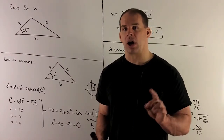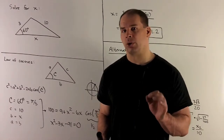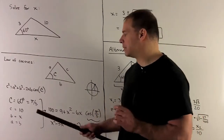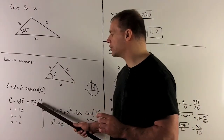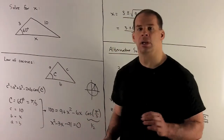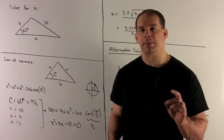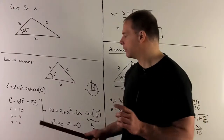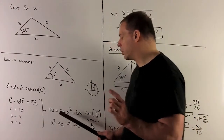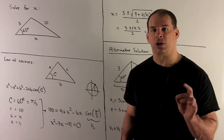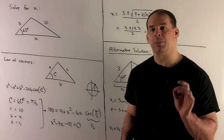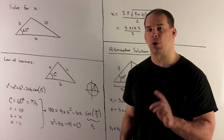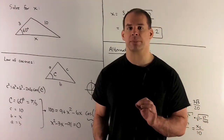Let's sort out our items and load them into the equation. Capital C is going to be 60 degrees, or pi thirds. Small c is going to be 10, b is going to be x, and a is going to be 3. We'll have 100 equals 9 plus x squared minus 6x times the cosine of pi thirds.